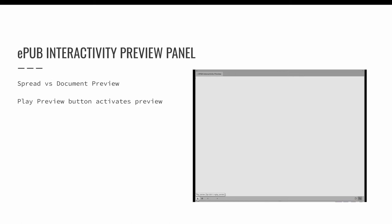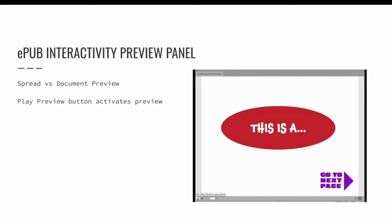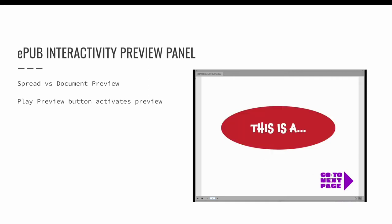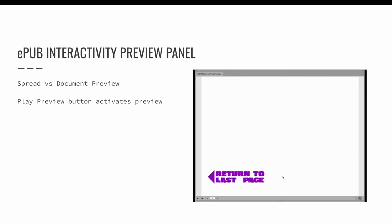To activate your interactivity, press the play preview button in the bottom left corner of the EPUB interactivity preview panel. The panel is quite small by default — you may want to drag a corner to make it bigger. Once the play preview button is activated, you can test your interactivity. For example, you can roll over a button to see the rollover change, and click the button to navigate to the next page.